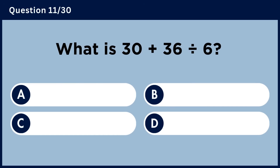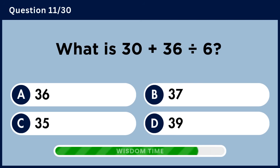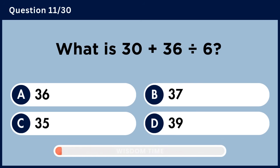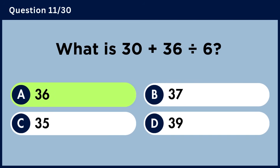What is 30 plus 36 divided by 6? Answer A: 36.